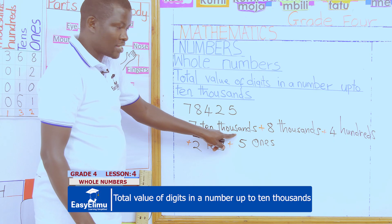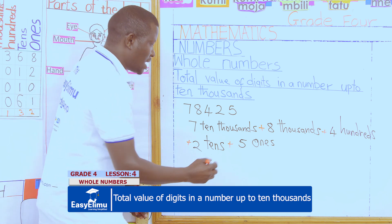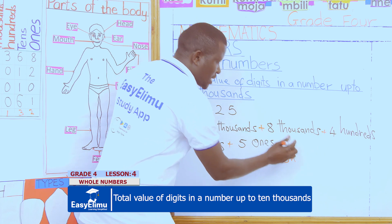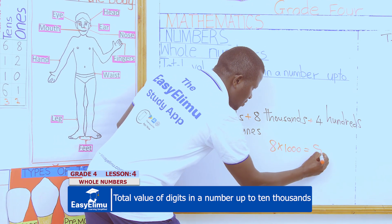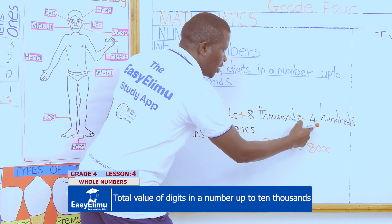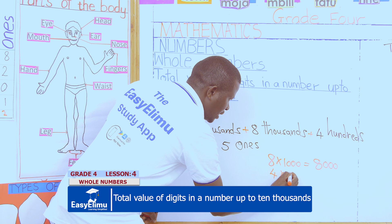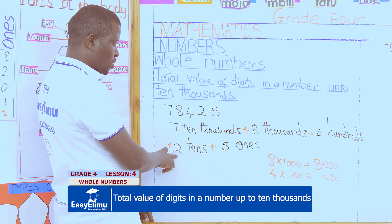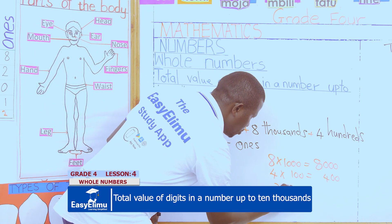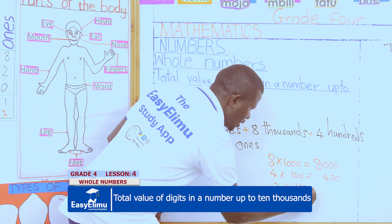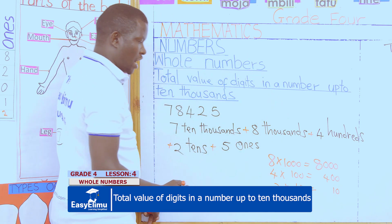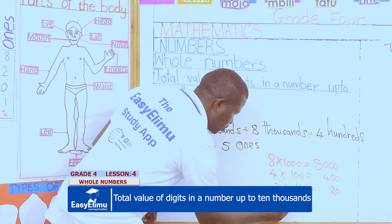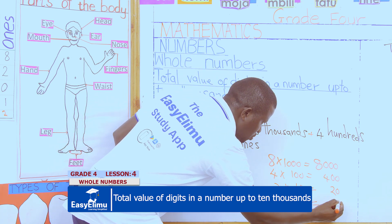Eight thousands: 8 multiplied by 1,000 gives eight thousand. Four hundreds: 4 multiplied by 100 gives four hundred. Two tens: 2 multiplied by 10 gives twenty. And five ones: 5 multiplied by 1 gives five.